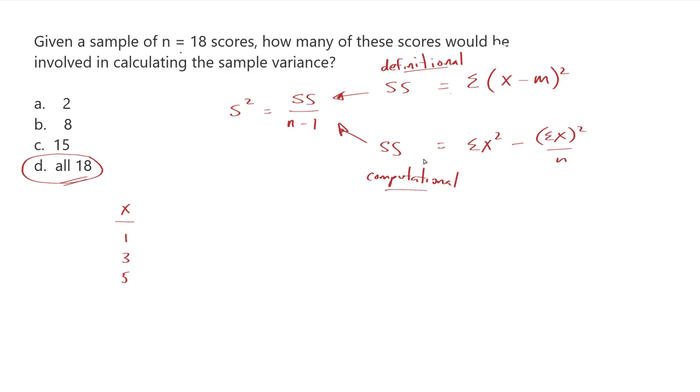Now, if I want to find my sum of squares, let's start off with the definitional formula. The definitional formula says that I'm going to need to know my sample mean. And so to find my sample mean, the sample mean being the sum of x over n, I need to know my sum of x. And that is 1 plus 3 makes 4 plus 5 makes 9. So this is 9 over 3. My sample mean is 3.